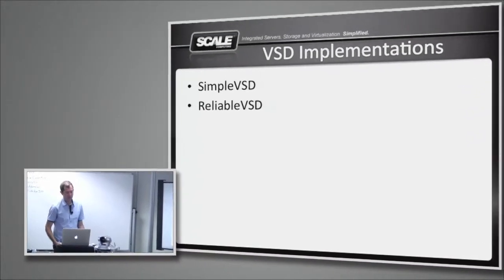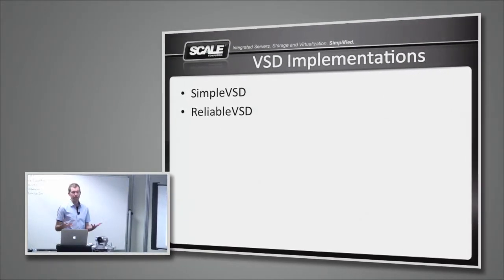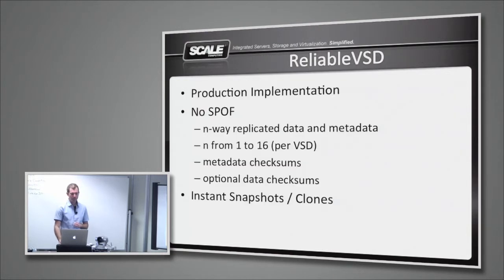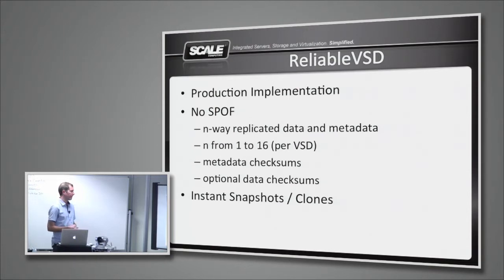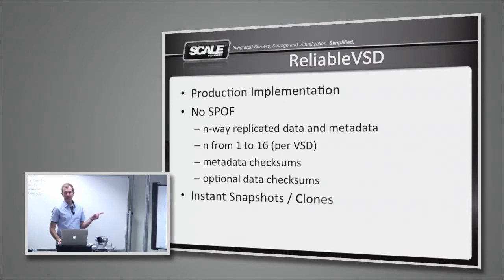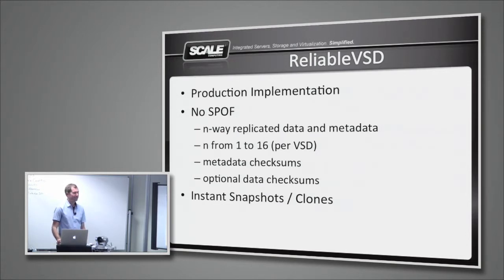Today we currently have a couple of VSD implementations. The first was really just our prototype, so we don't use it anymore — the idea being you can create a simple VSD that doesn't do any data protection, no replication, just write one copy. Obviously that's not safe. The Reliable VSD is our production implementation. It has no single point of failure, n-way replicated data and metadata, n up to 16 — 16 is completely extreme but you can do it. Metadata checksumming is implemented; optional data checksumming is on the roadmap. Performance on 16 replicas is poor for writes, though reads are fast.